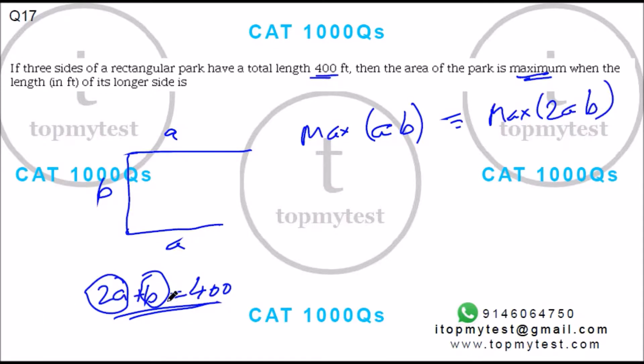We know arithmetic mean of 2a and B will be greater than or equal to geometric mean of 2a and B.